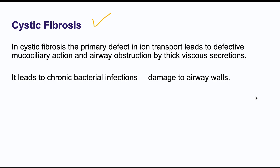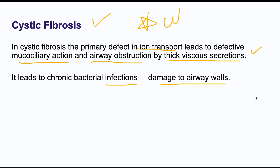In cystic fibrosis, there is a primary defect in ion transport, causing defective mucociliary action and airway obstruction, resulting in thick viscous secretions. These thick secretions lead to infections and damage to the airway walls. The main issue here is defective ciliary action.